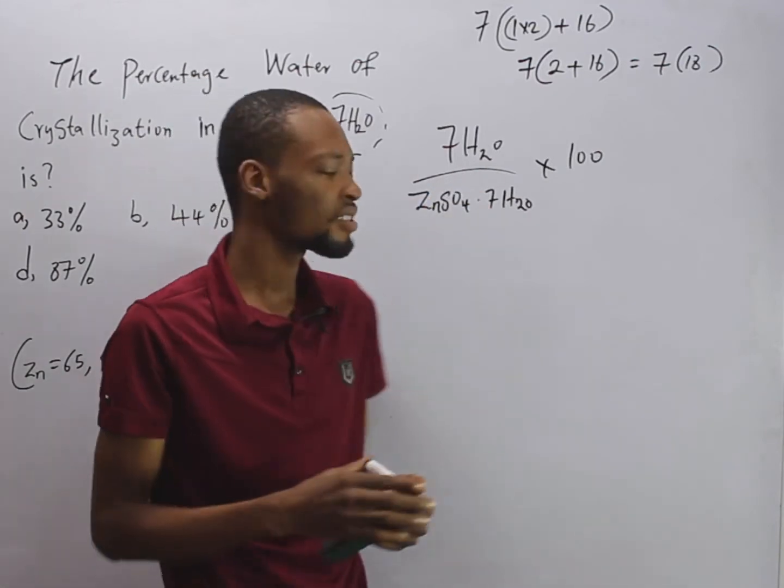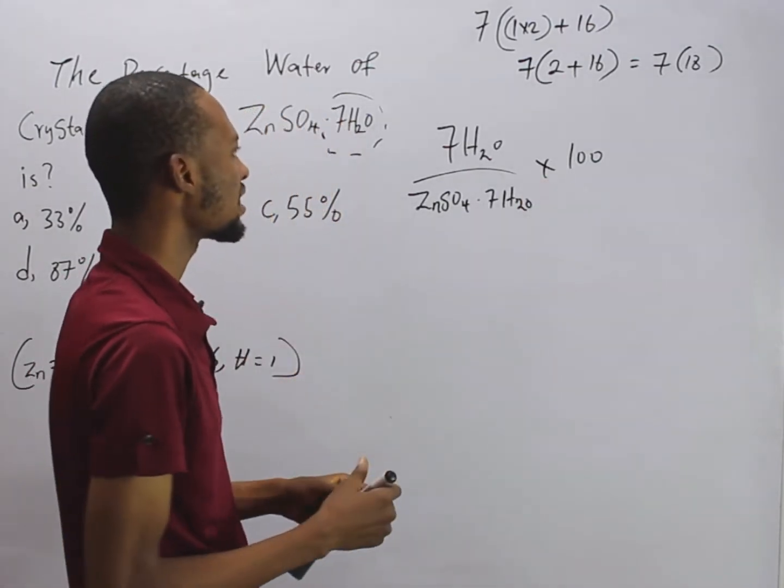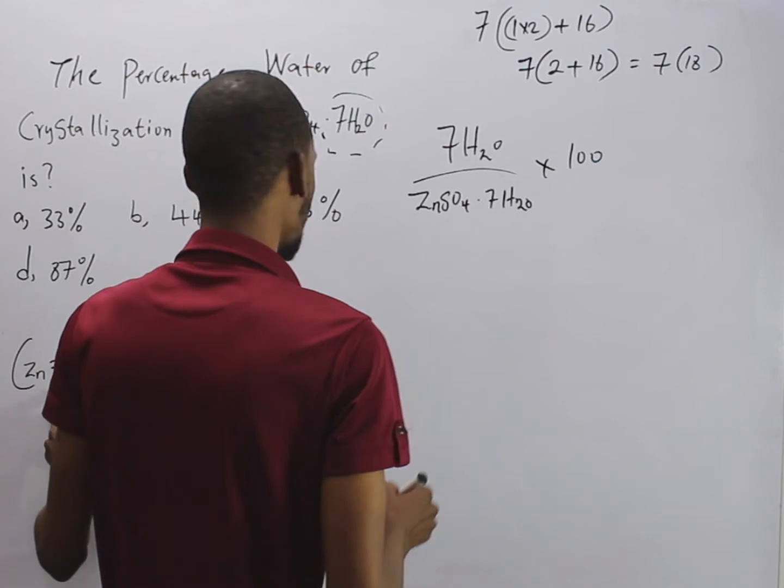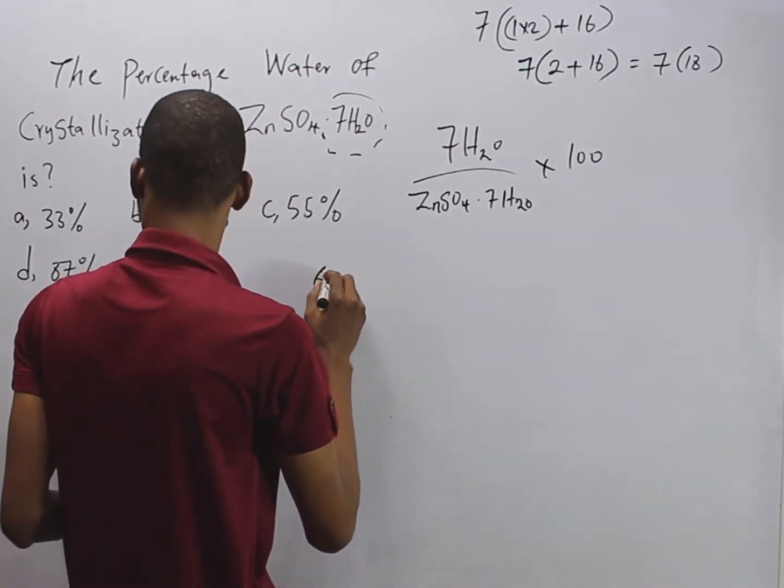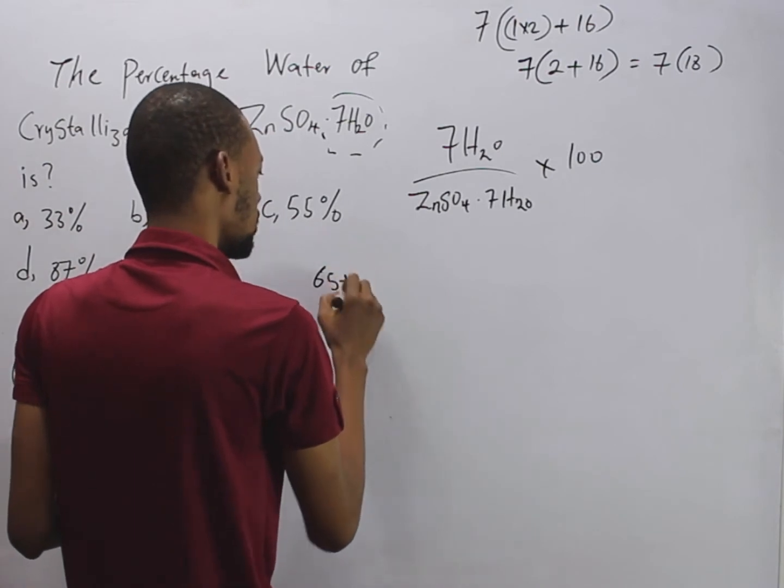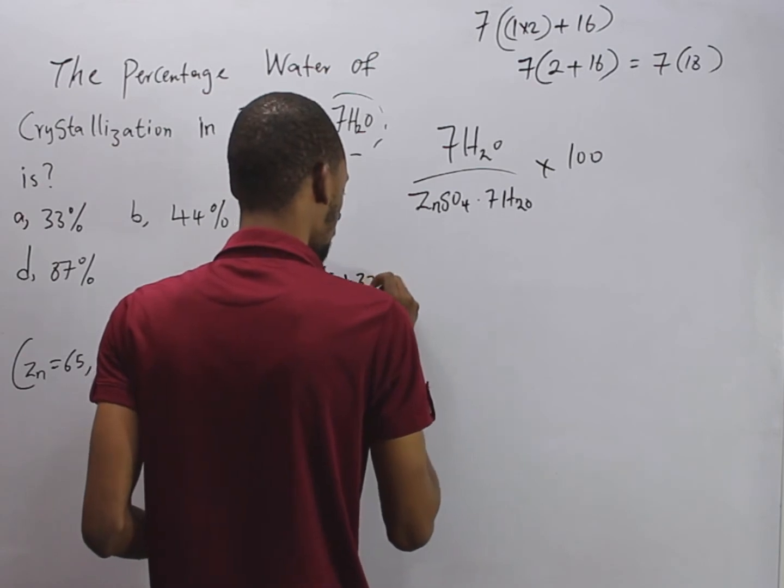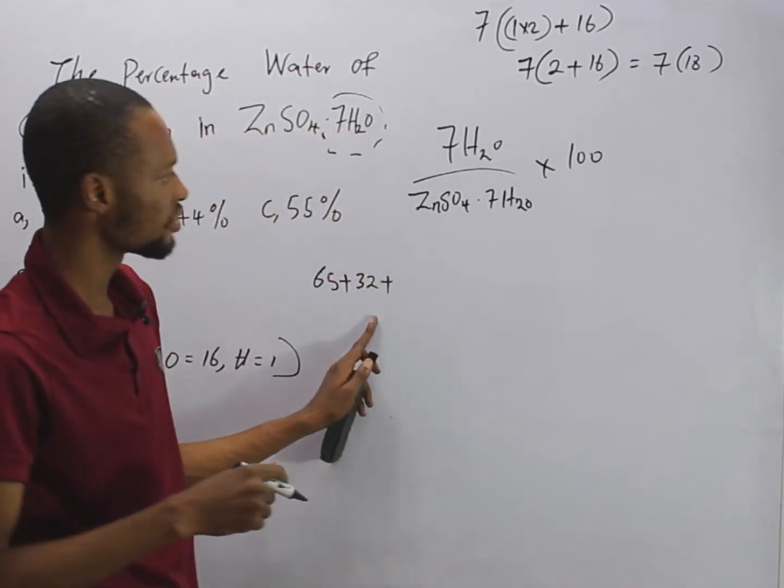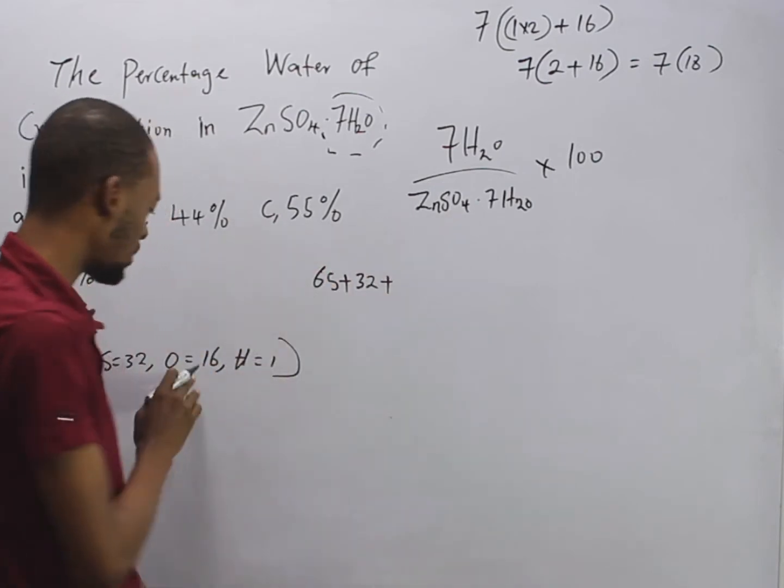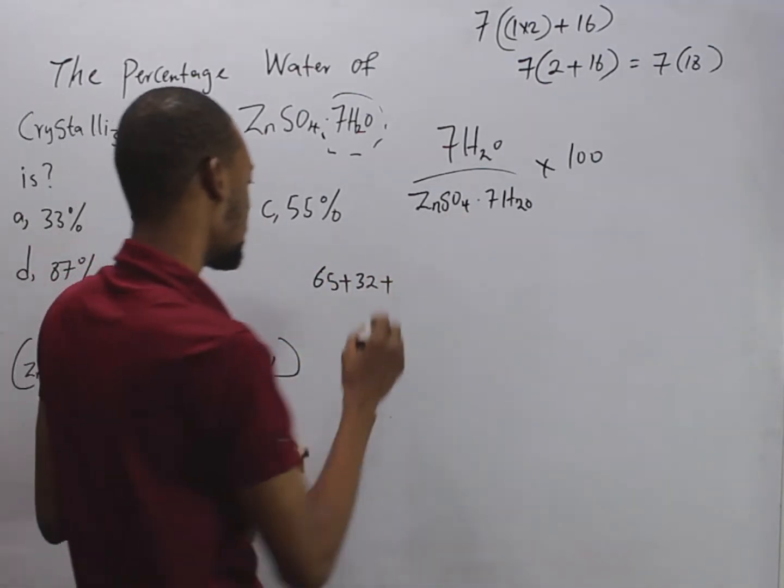What about the full compound itself? The mass of zinc is 65, so we have 65 plus sulfur is 32, plus 32, plus oxygen. Oxygen is 16, that's the mass of oxygen. But we have 4 oxygen, so it means we are multiplying 16 by 4.